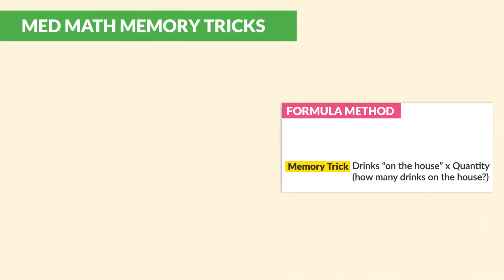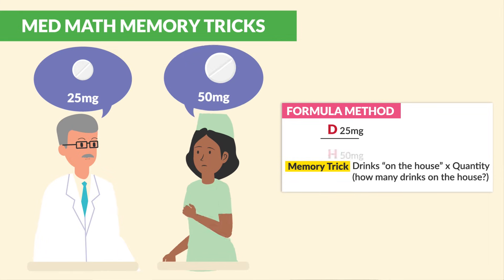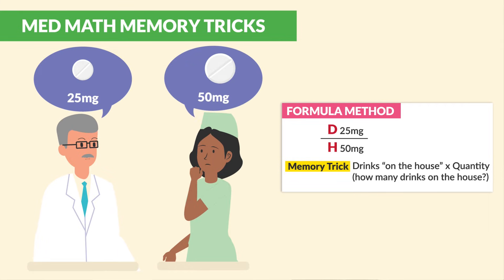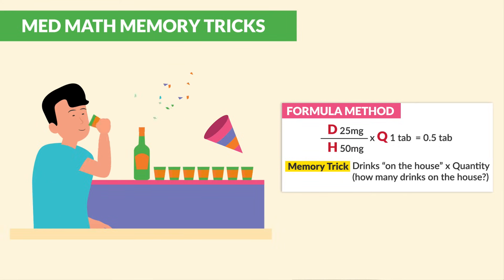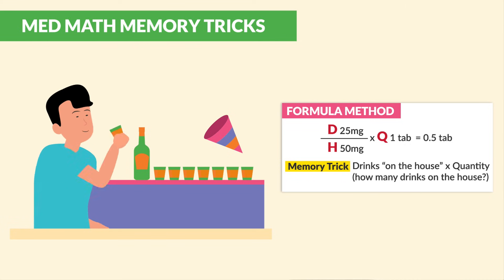Here's a little example. Let's say the doctor says to give a 25 milligram drug, but you have 50 milligrams of that drug. The D would be 25, and what you have on hand is 50 milligrams times one tab in terms of quantity. So doing the calculation, our correct answer is half a tab. The memory trick, once again: drinks are on the house times the quantity.